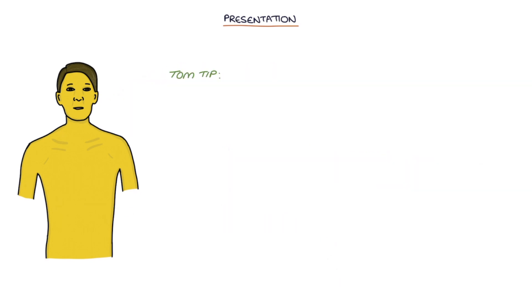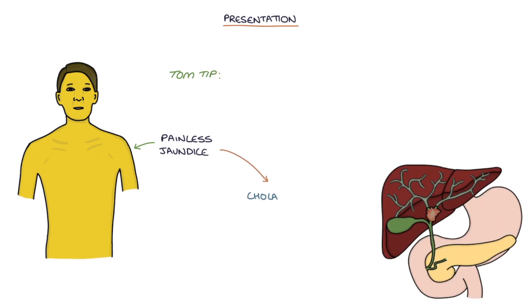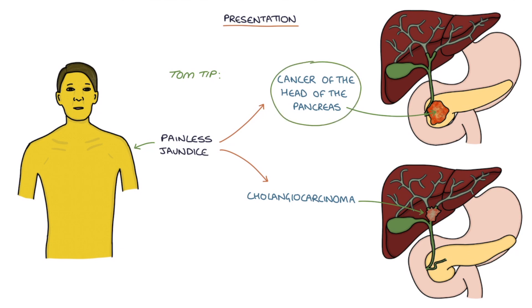A Tom tip for you: painless jaundice should make you think of cholangiocarcinoma or cancer of the head of the pancreas. Pancreatic cancer is more common, so this is likely to be the answer in your exams.